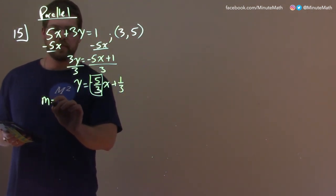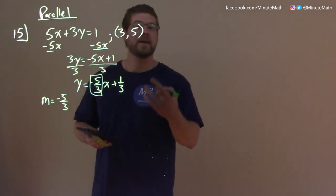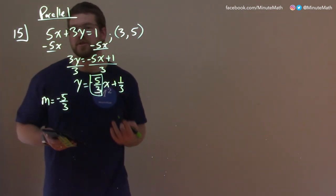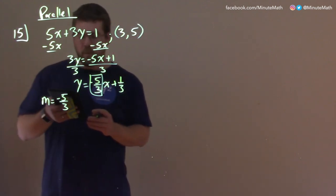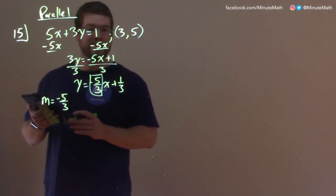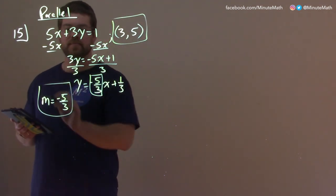So our slope here is negative 5 thirds, and since the line we want to find is parallel to this one, they're going to share the same slope. So what we can do now is use a point-slope form. We have a point, we have our slope, and we're good.